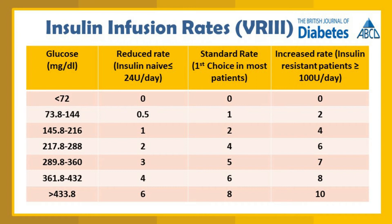This protocol is from the British Journal of Diabetes. In the first column you can see different blood glucose levels. For insulin-naive patients with a total daily dose less than 24 units per day, if blood glucose is around 145.8 to 216 mg/dL, only 1 unit is required. The standard rate is the first choice in most patients. You can see how insulin units vary as blood glucose increases, up to the increased rate for insulin-resistant patients requiring more than 100 units per day.